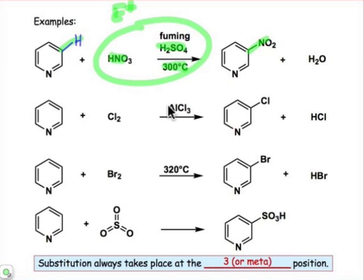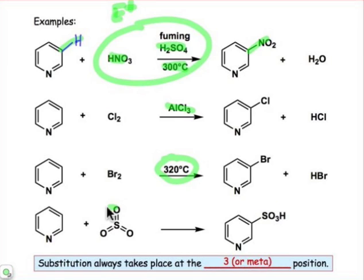Chlorination requires a very demanding, very potent Lewis acid — aluminum trichloride. Bromination requires 320 degrees Celsius. And sulfonation requires sulfur trioxide, a very potent Lewis acid and a very potent electrophile, in order to carry out that substitution. So in addition to being deactivated, these reactions all require very demanding conditions.